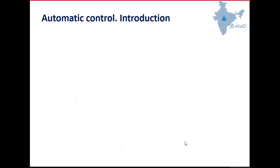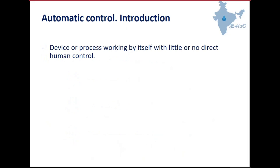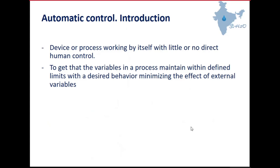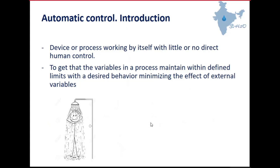If you look at definitions of automatic control, you can read, for example, that automatic control is a device or process working by itself with little or no direct human control. You can also read that it is to get the variables in a process maintained within finite limits with decided behavior, minimizing the effect of external variables. But probably, if you are not involved in this science, this kind of definition can be a little difficult to understand, so the best way is to use an example — taking a shower.